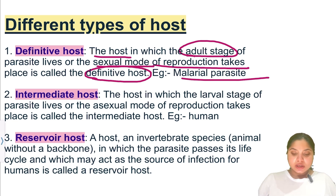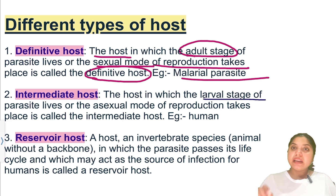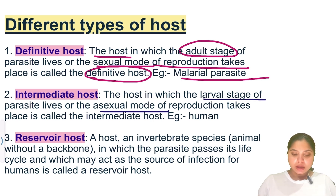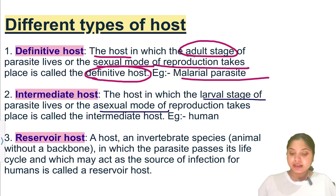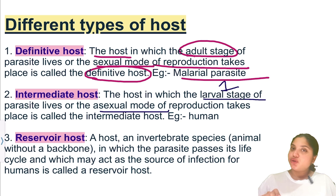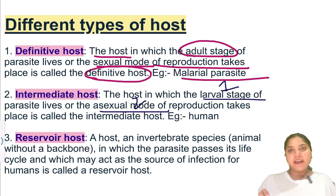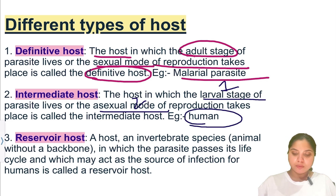The intermediate host is the host in which the larval stage of the parasite exists, and asexual mode of reproduction takes place — not sexual reproduction. To remember the intermediate host: firstly, there is a larval stage; secondly, because of the larval stage, asexual mode of reproduction occurs. That is the intermediate host, with the example being human beings.